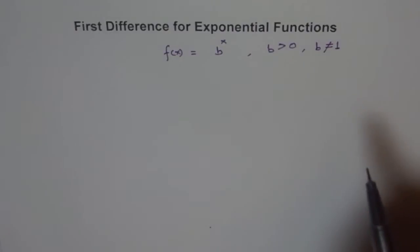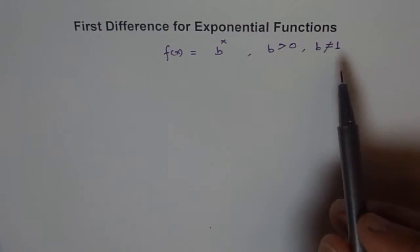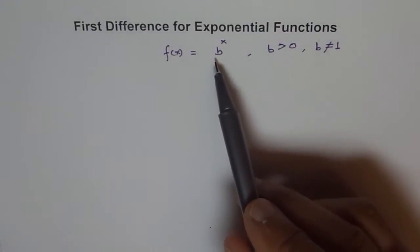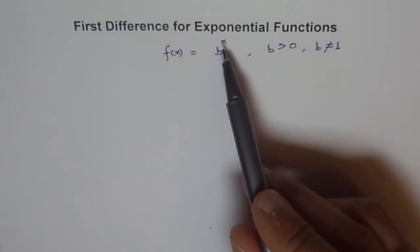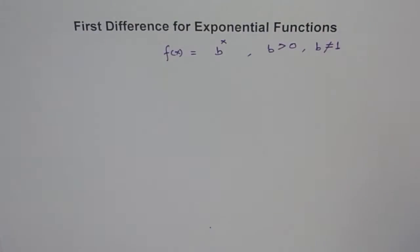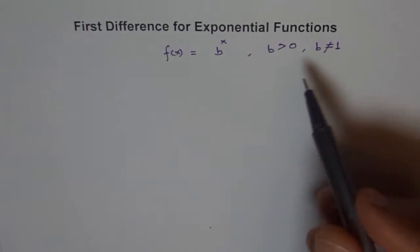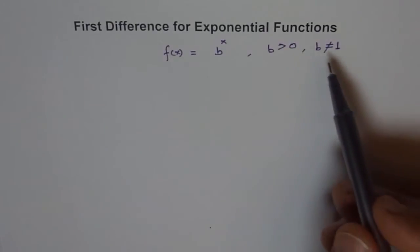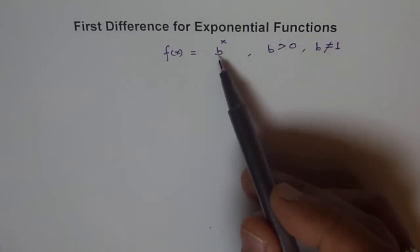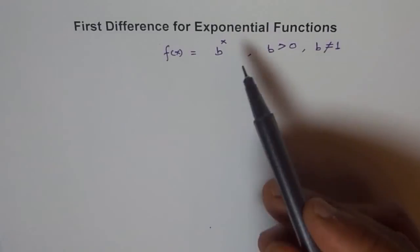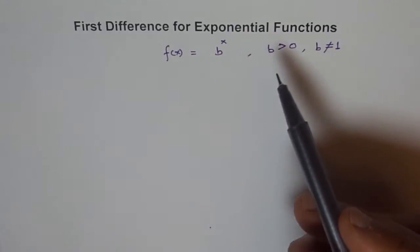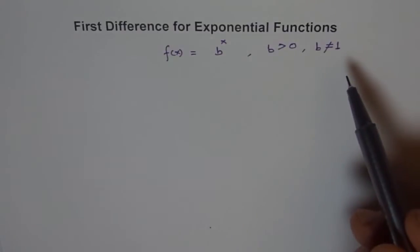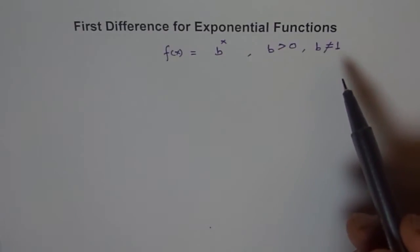Why is b not equal to 1? If b equals 1, then 1 to the power of anything is always 1. So 1^0 = 1, 1^1 = 1, 1^10 = 1 — it is no longer an exponential function. It is just the constant function 1.